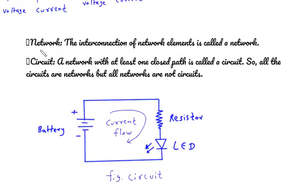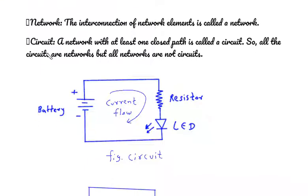What is meant by network? The interconnection of network elements is called a network. What is circuit? A network with at least one closed path is called a circuit. So all circuits are networks but all networks are not circuits.